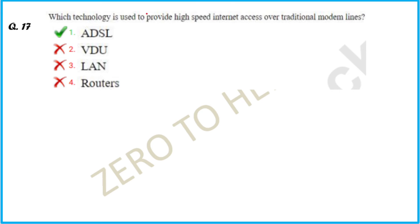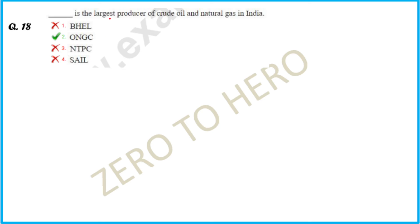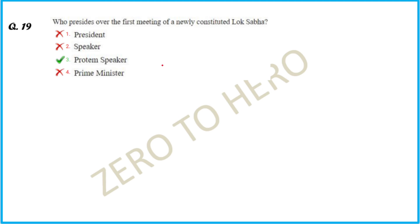What is the technology used to provide high speed internet access over traditional telephone land lines? ADSL. The largest producer of crude oil and natural gas in India is ONGC. Who presided over the first meeting of the newly constituted Lok Sabha? The Pro-tem Speaker.